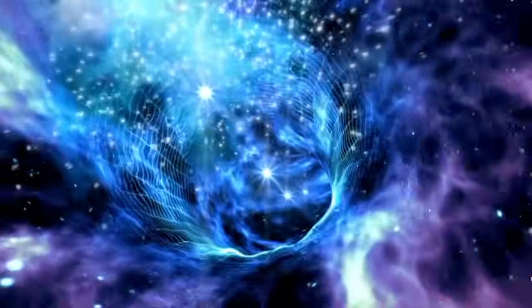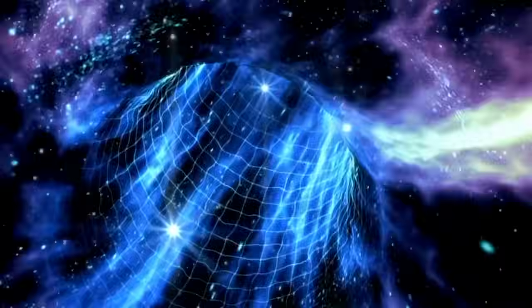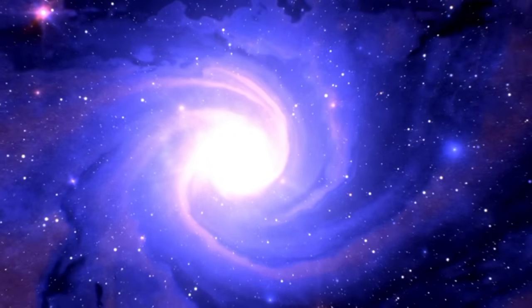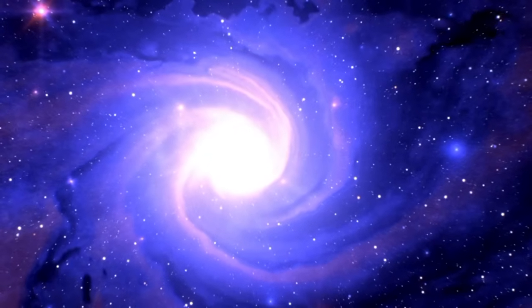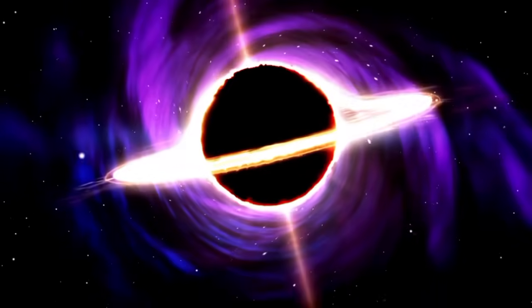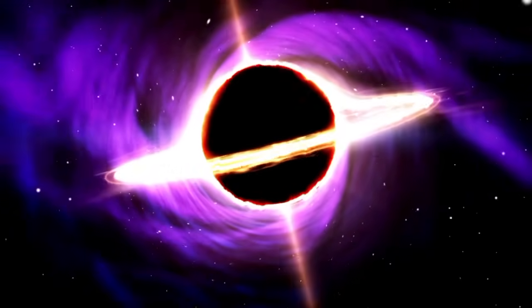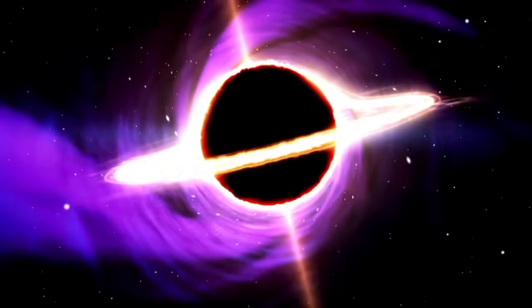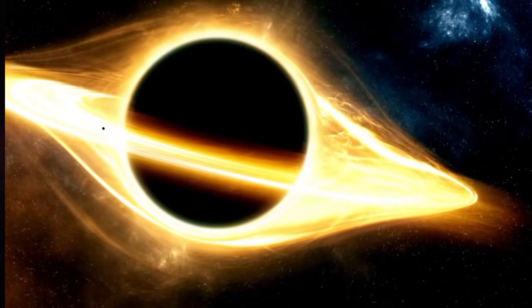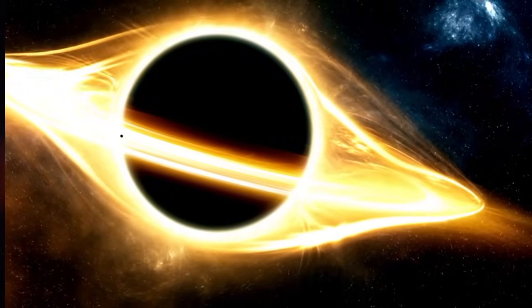In 1963, New Zealand mathematician Roy Kerr used Einstein's equations of gravity to provide the best description of a rotating black hole. He showed that a rotating black hole wouldn't collapse into a point, as previously thought, but would instead form a ring of fire or a thin disk. The disk would rotate so rapidly that outward forces would prevent it from collapsing. This rotating disk of matter is known as the ergosphere, the region surrounding the black hole where the laws of physics start to break down.